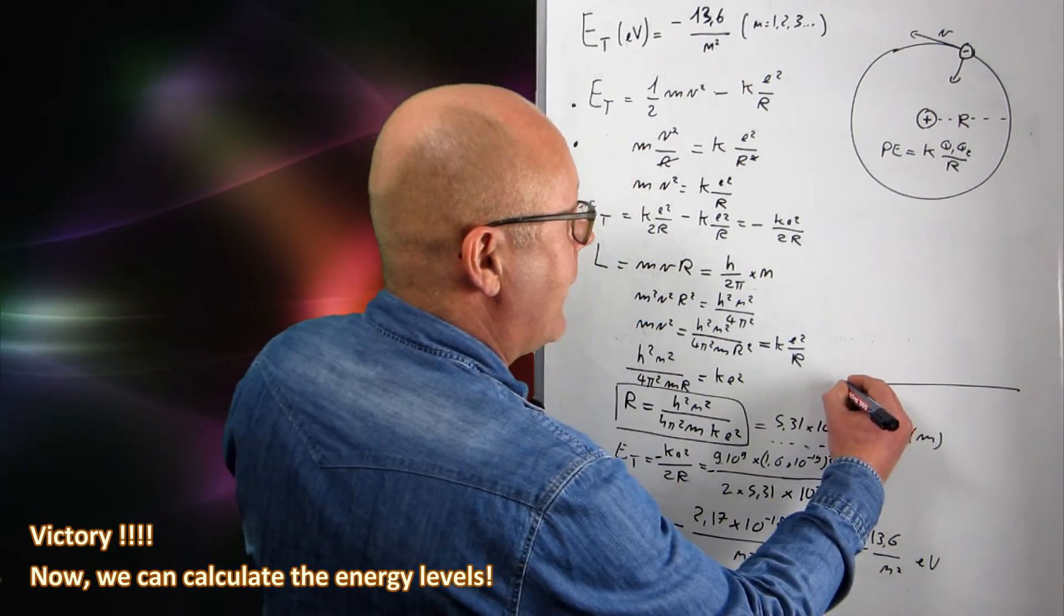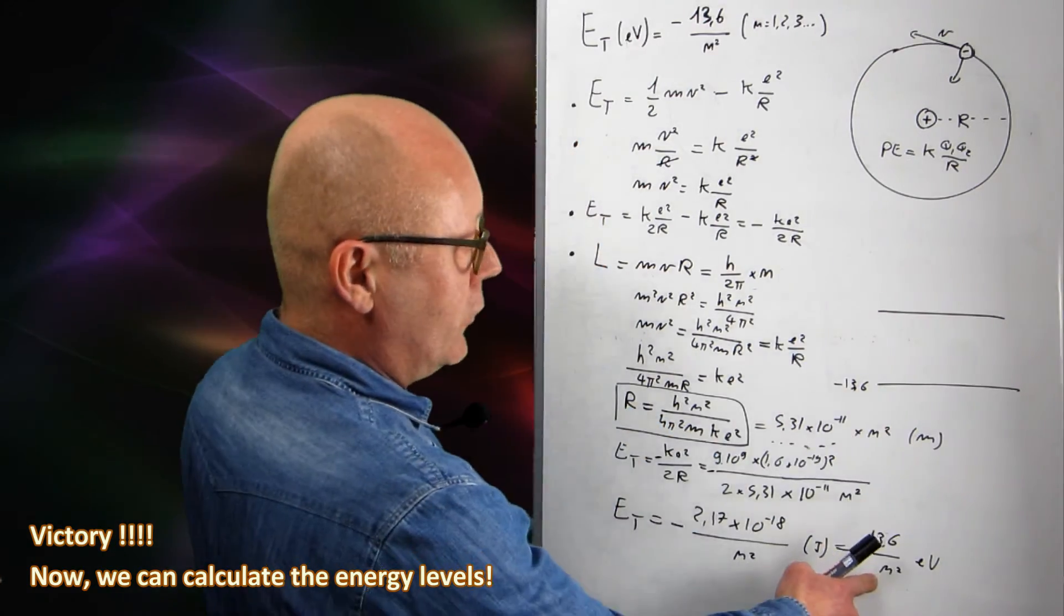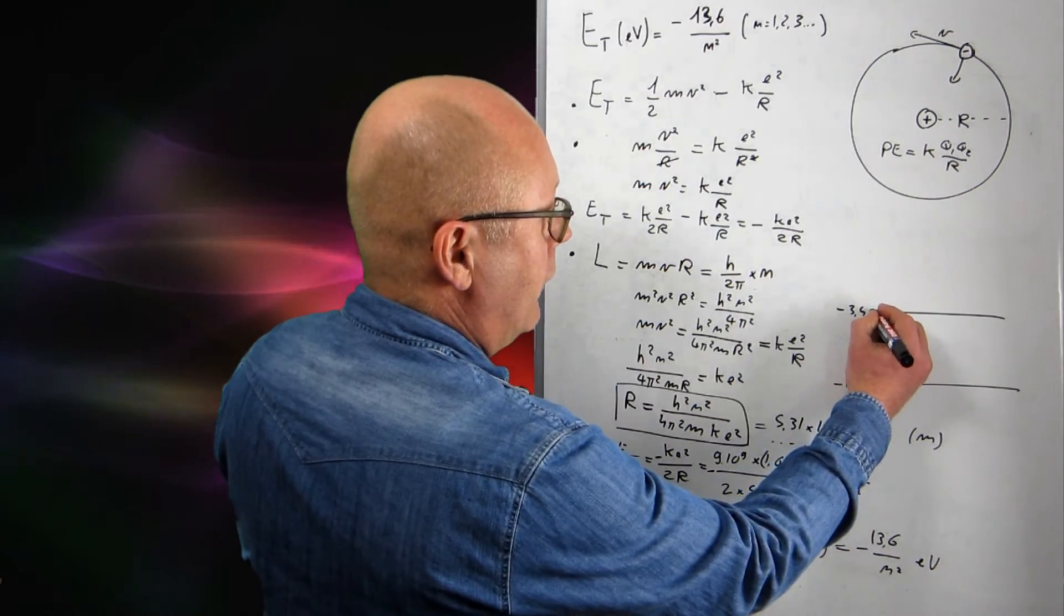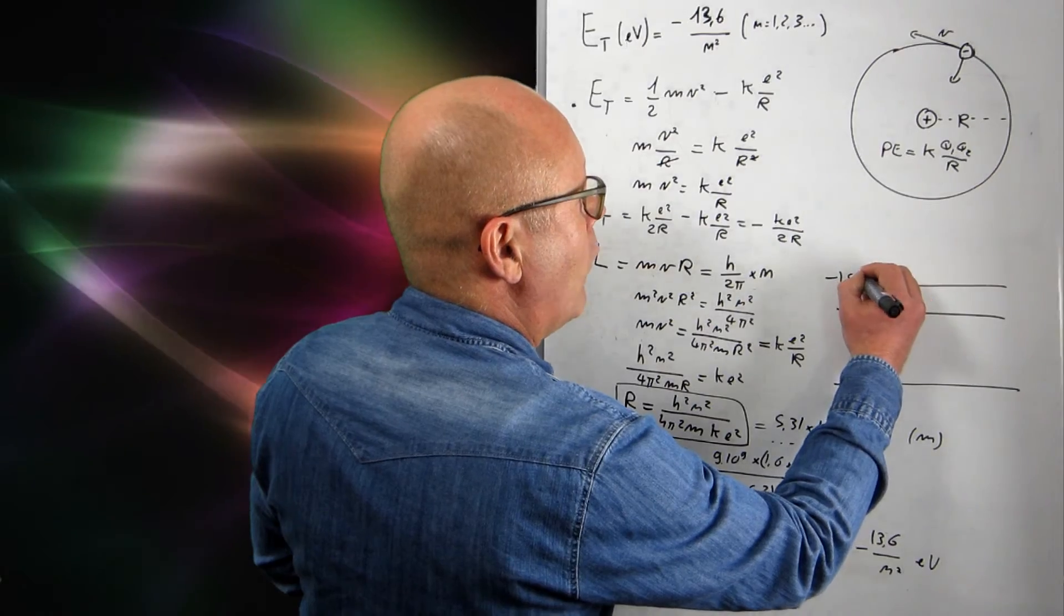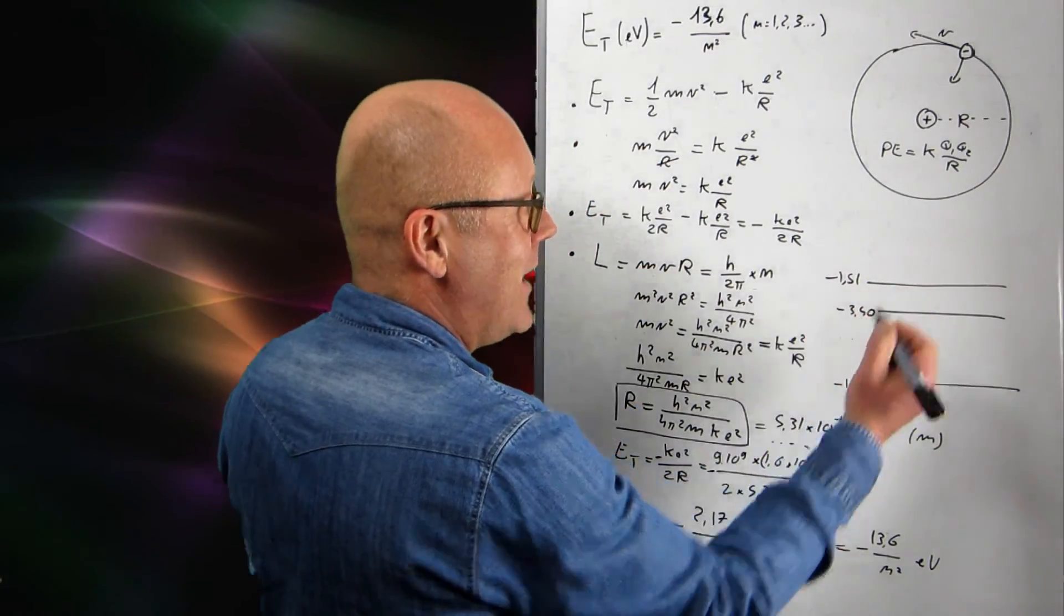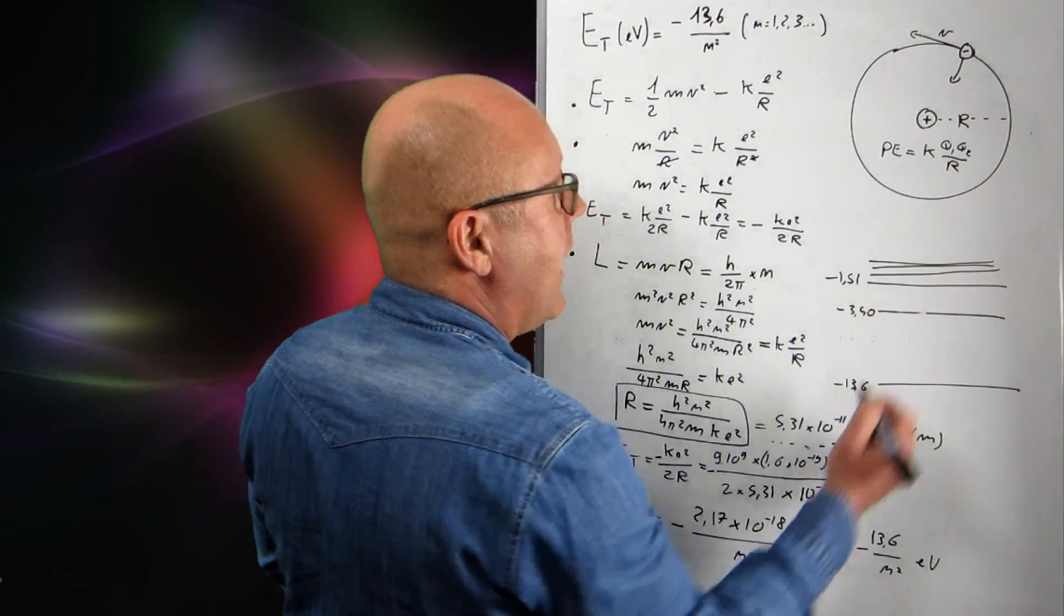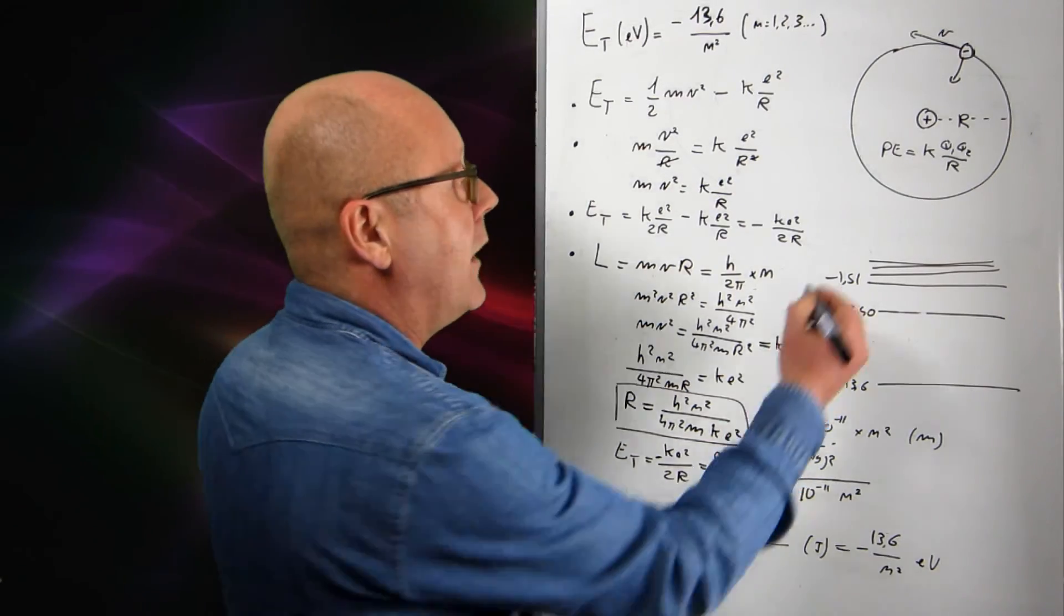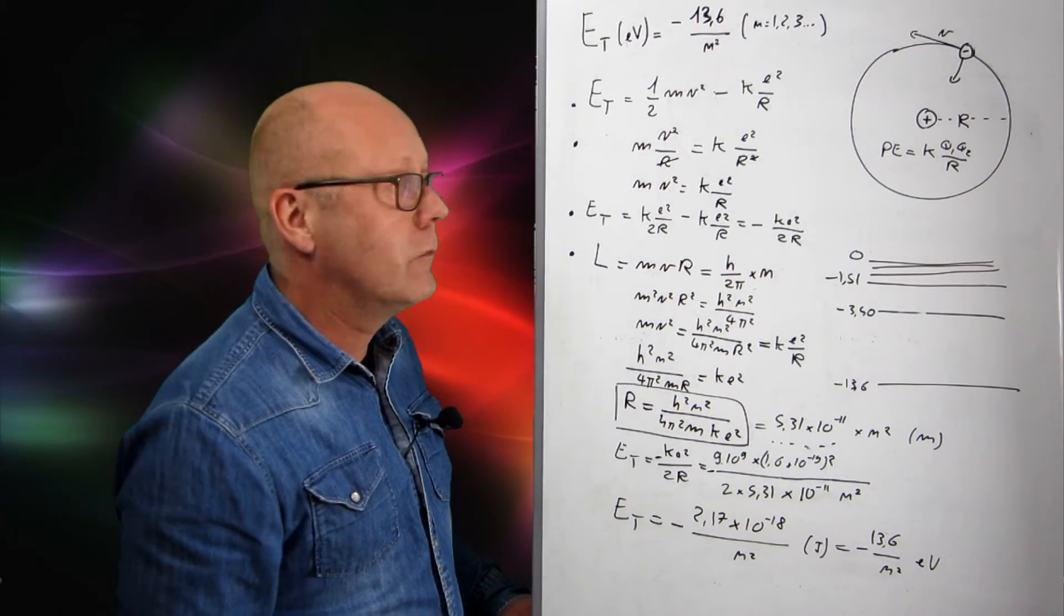So, if n equals 1, I get minus 13.6. If n equals 2, I get minus 3.4, I think. If n equals 9, I will get minus 1.51. I'm not totally sure of these, because it's just by memory. And then, if you increase n, you approach zero. For n equals infinite, you find zero. And that corresponds when the electron is ejected out of the atom, the ionization.